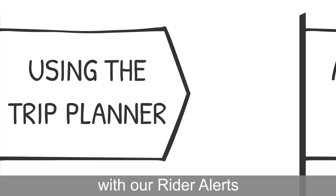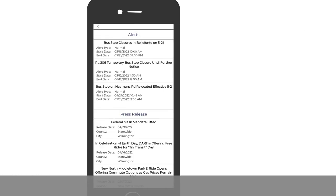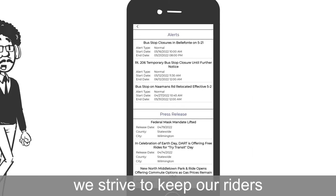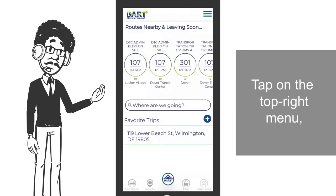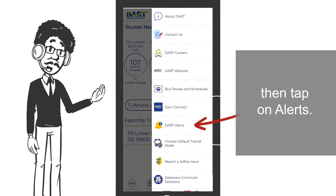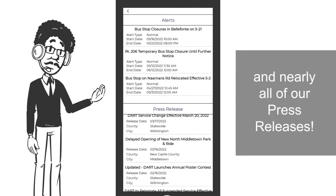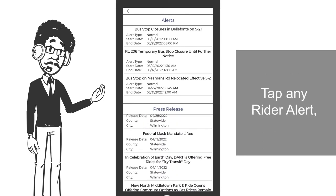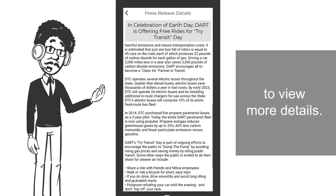Stay updated with our rider alerts and news. The alerts feature is one of many ways we strive to keep our riders safe and updated. Tap on the top right menu, then tap on alerts. View our most recent rider alerts and nearly all of our press releases. Tap any rider alert or any press release to view more details.